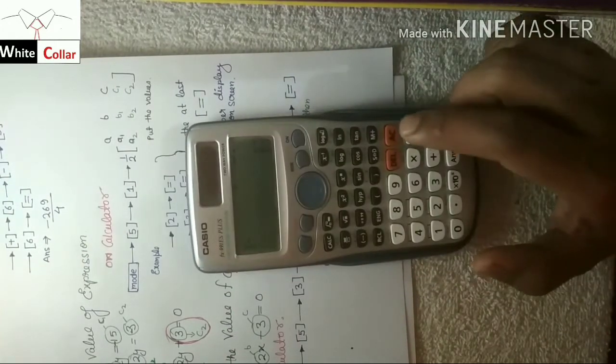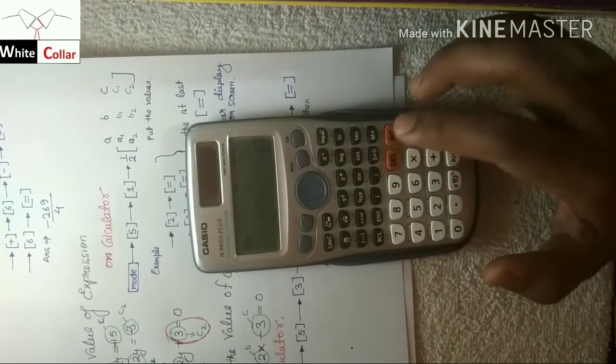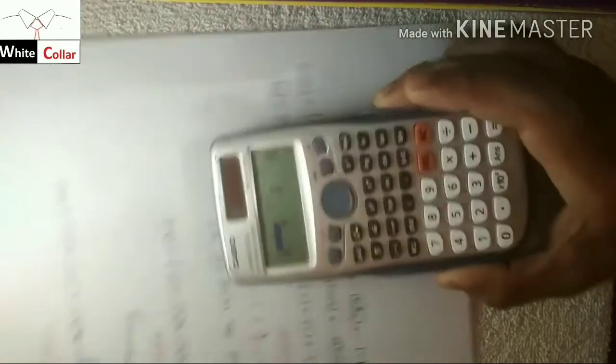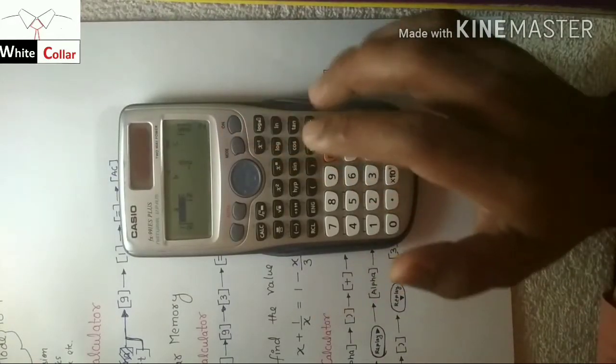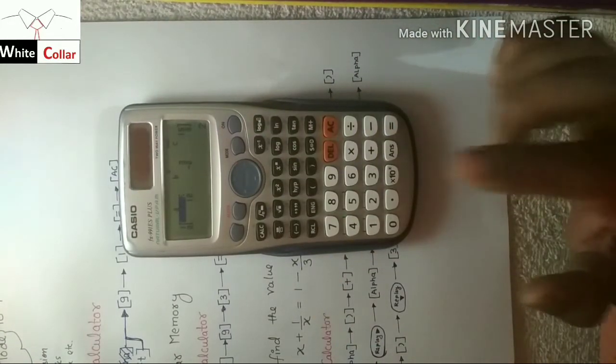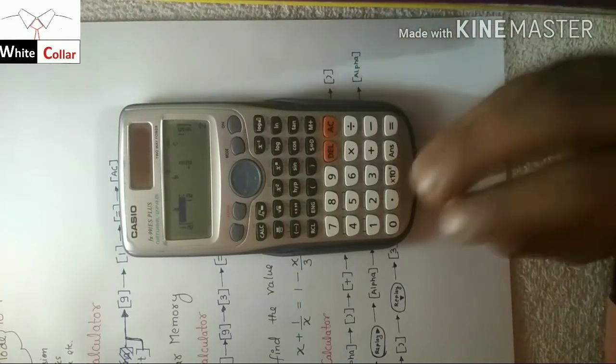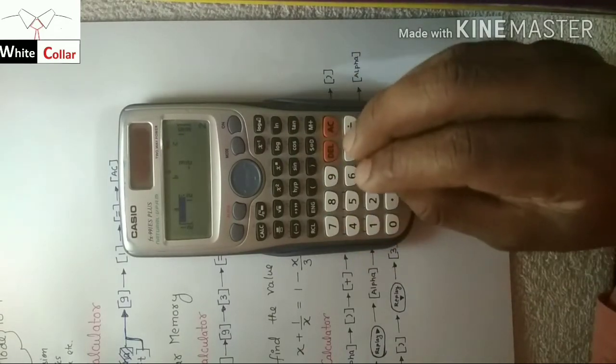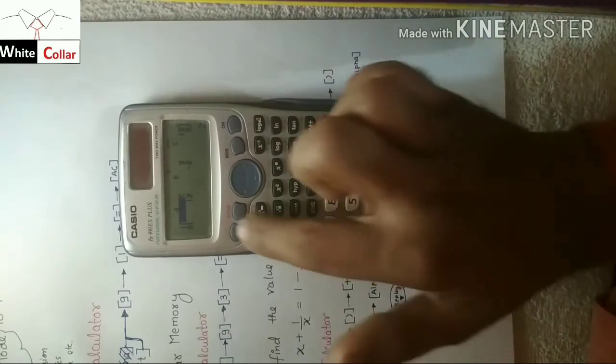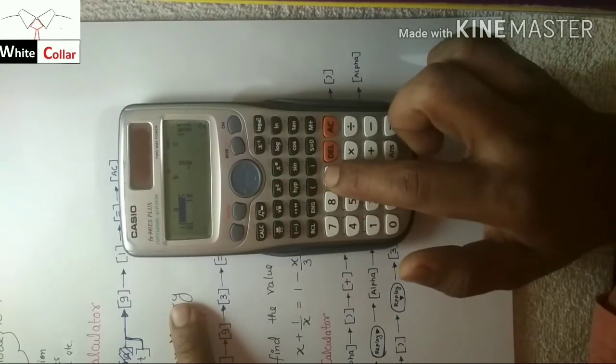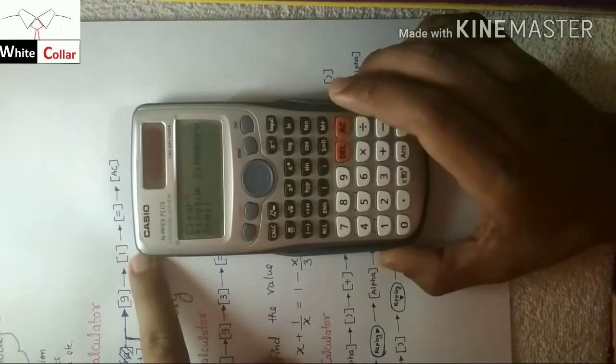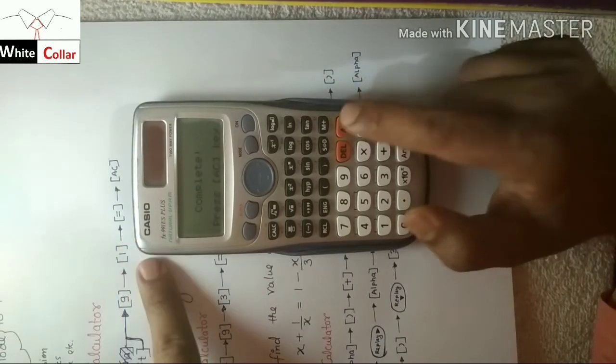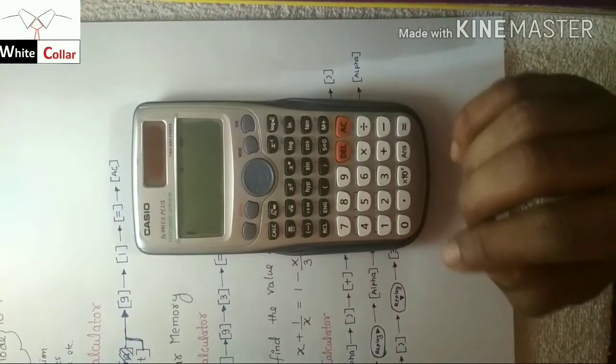Now moving to the third problem. Before moving to the third problem, I can't move from this page directly. What I have to do? I have to clear the memory or I have to move to the normal mode. So to go to the normal mode from this equation mode, this is not a simple task. So what you have to do? First click on shift, then click on 9, click on 1, then equals to complete all clear. Now you are back to the normal mode.